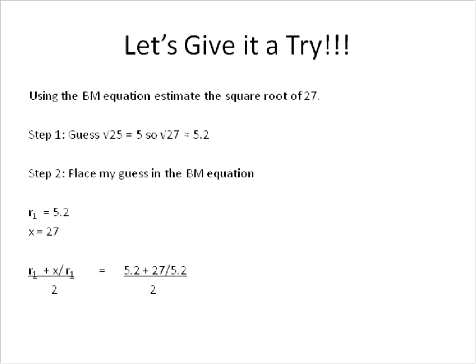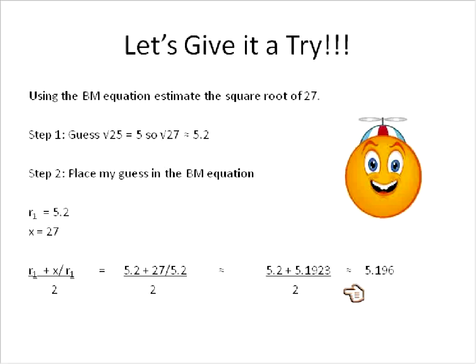27 divided by 5.2 is approximately 5.1923. You can do this in your head, or you can use long division, or you can use a calculator. If you're using decimals, generally I use a calculator just to save myself a little bit of time. So I'll add these two together and divide them by 2, and I get the answer of 5.196.